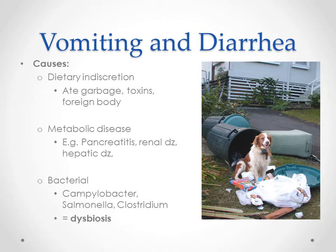There are lots of different organ system issues that can cause vomiting and diarrhea. This is why we'll do blood work on a vomiting animal — we want to rule out or find any metabolic disease, because that changes the picture significantly. If you assume dietary indiscretion and the blood work reveals kidney failure, you have an entirely different set of treatments to consider.